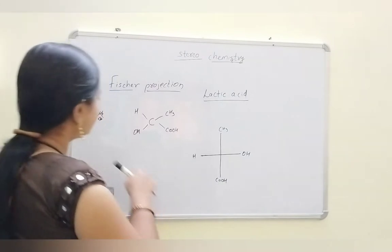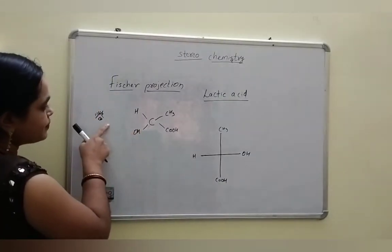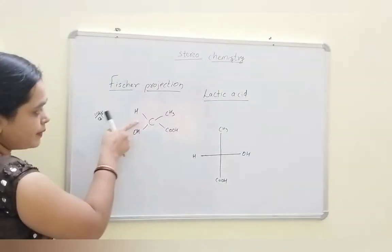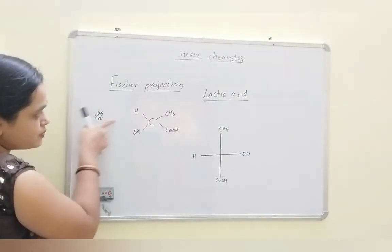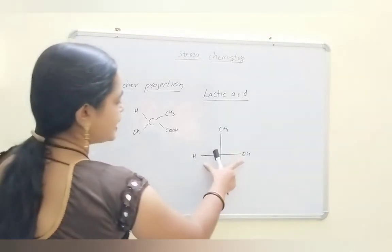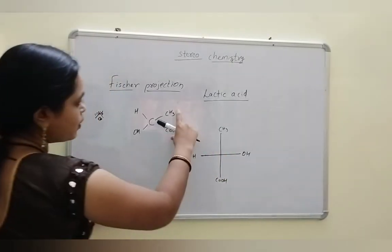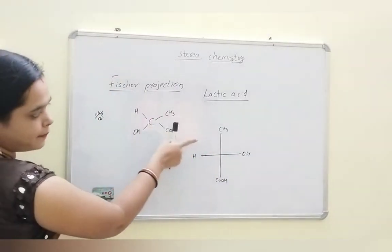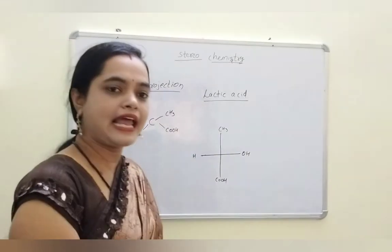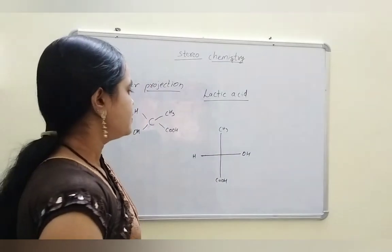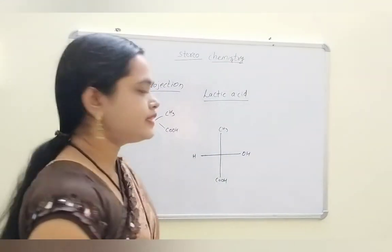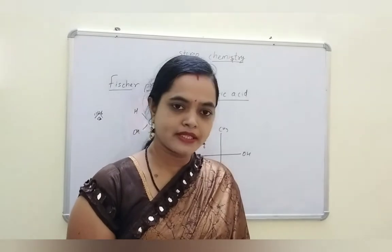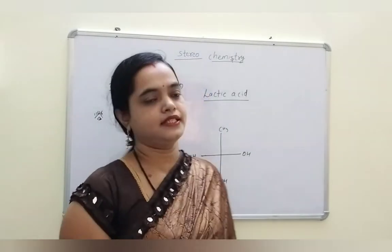The bonds that are towards the observer are coming towards the observer on the horizontal line. If the bonds are away from the observer, they are present on vertical lines. In this Fischer projection, two enantiomers are present.